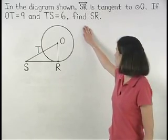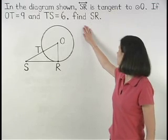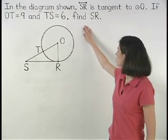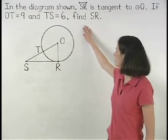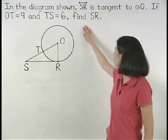In the diagram shown, line SR is tangent to circle O. If OT equals 9 and TS equals 6, find SR.